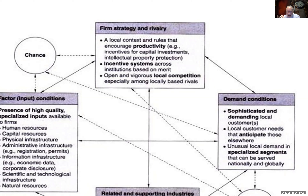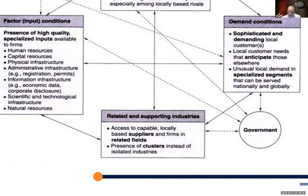Firm strategy and rivalry looks at what encourages productivity — for example, incentives for capital investment such as tax abatements for a number of years if a factory is located in a particular area. It also covers intellectual property protection — how well someone's ideas are protected — and what other incentives exist to attract foreign direct investment, as well as local competition to help refine the product.